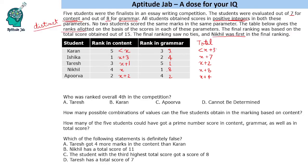Less than X plus 3 could include X plus 2, but that would tie with another student, which is not allowed since the final ranking had no ties. So Karan's total must be less than X minus 1, making his total less than X plus 2, ensuring distinct rankings. This confirms the order: Ishika first, second, third, Nikhil fourth in content, and Karan fifth overall.